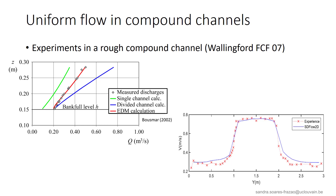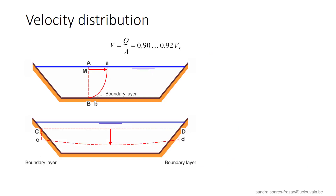The development of this method is far beyond the scope of this course. This leads us to have a closer look at the velocity distribution in a cross section. We have assumed a constant velocity, but we have just seen that it is not always the case.